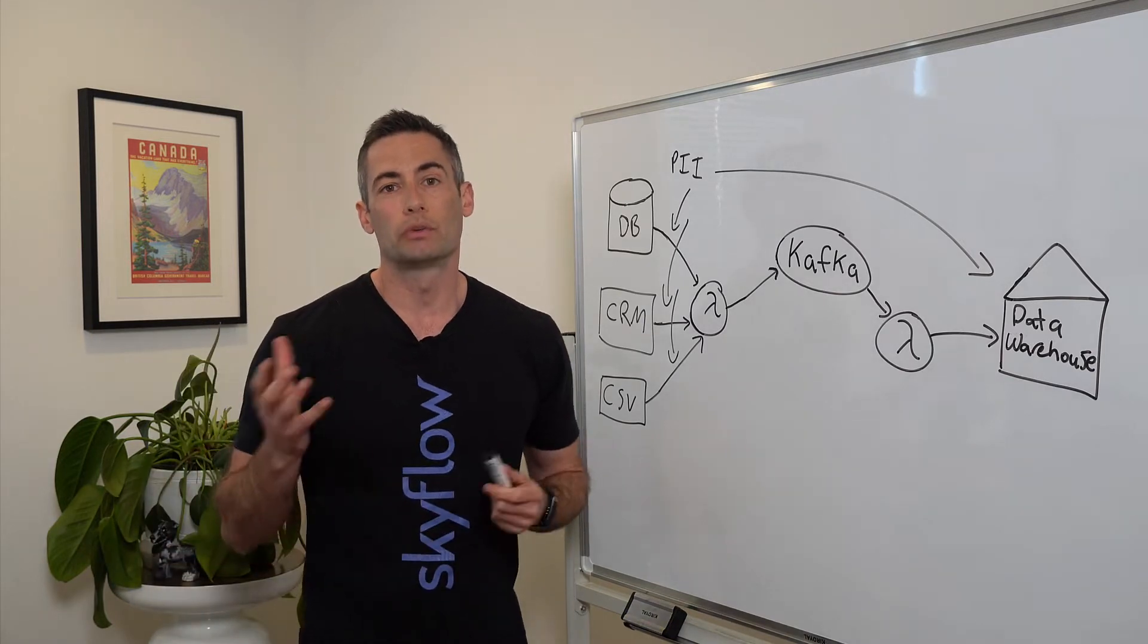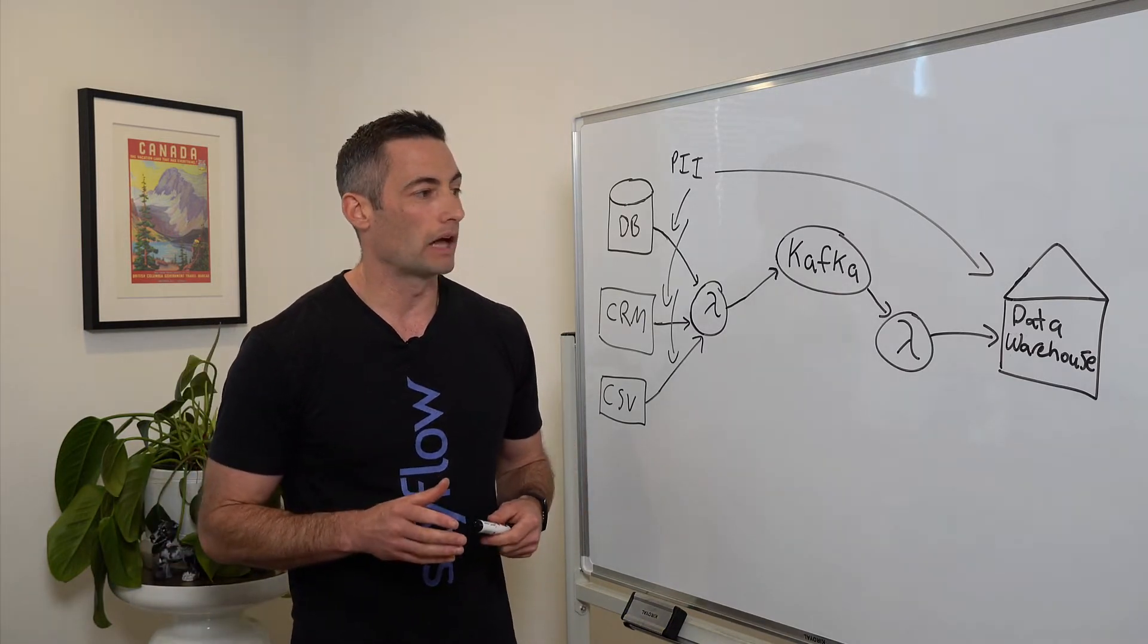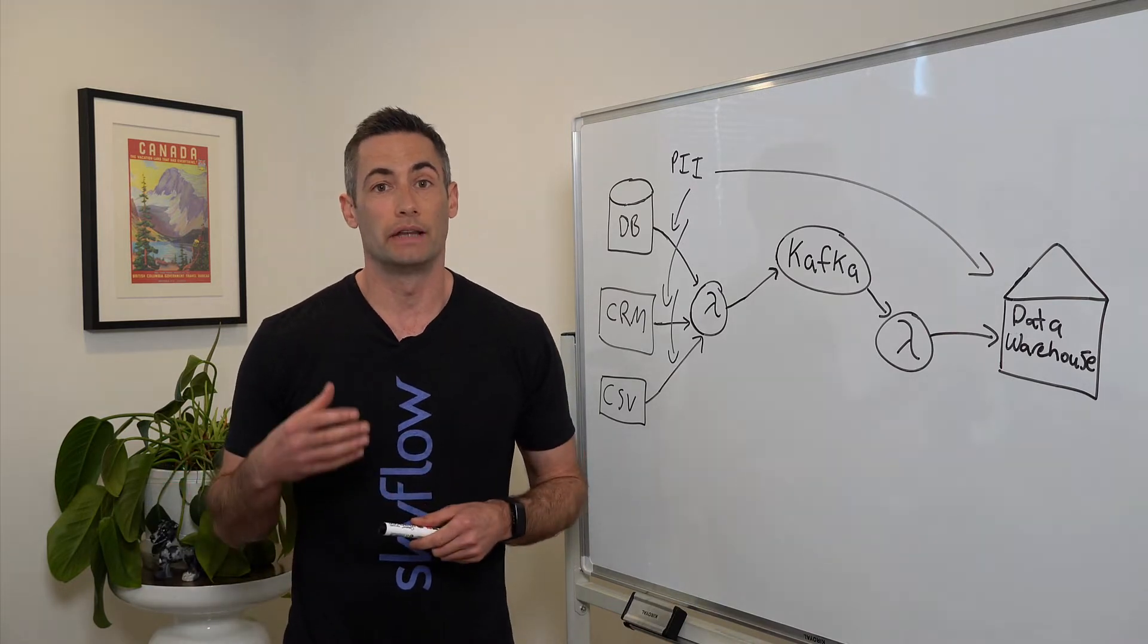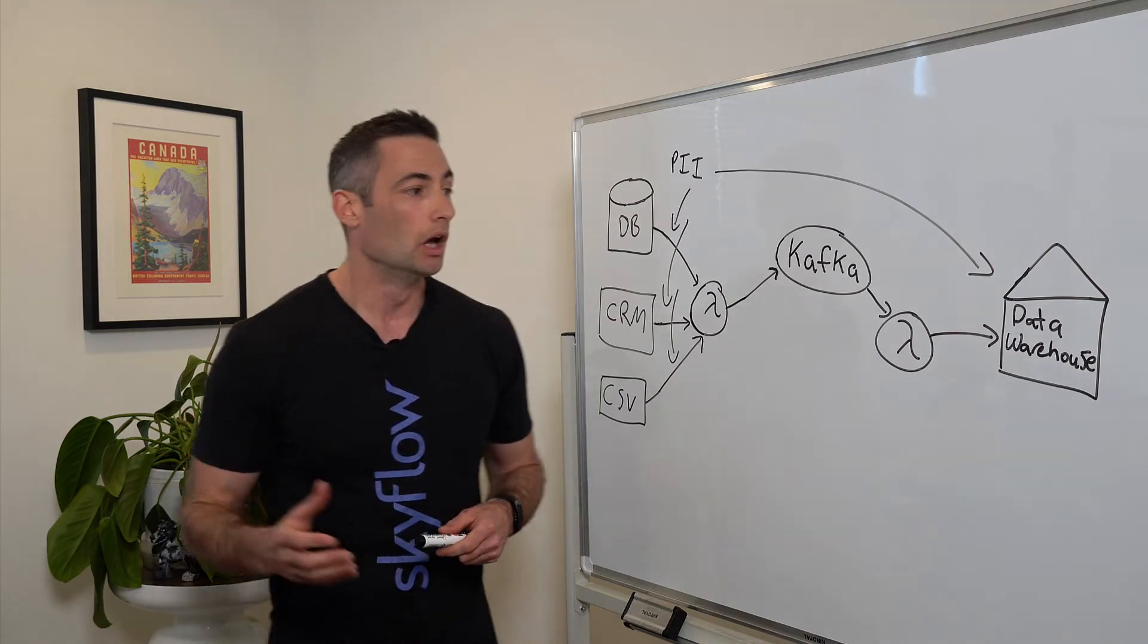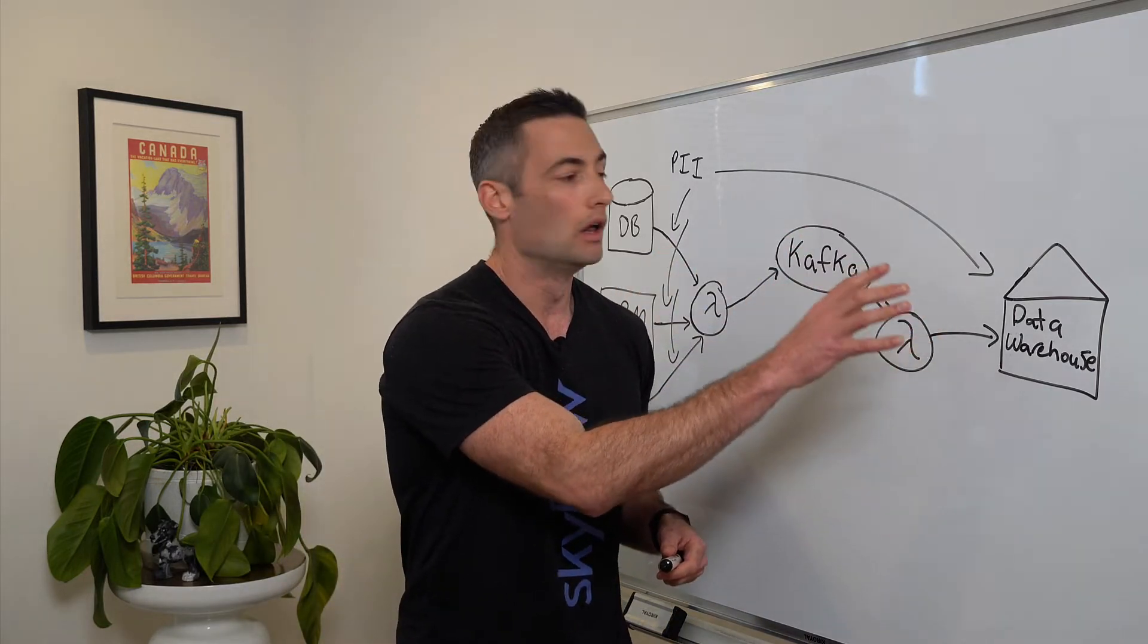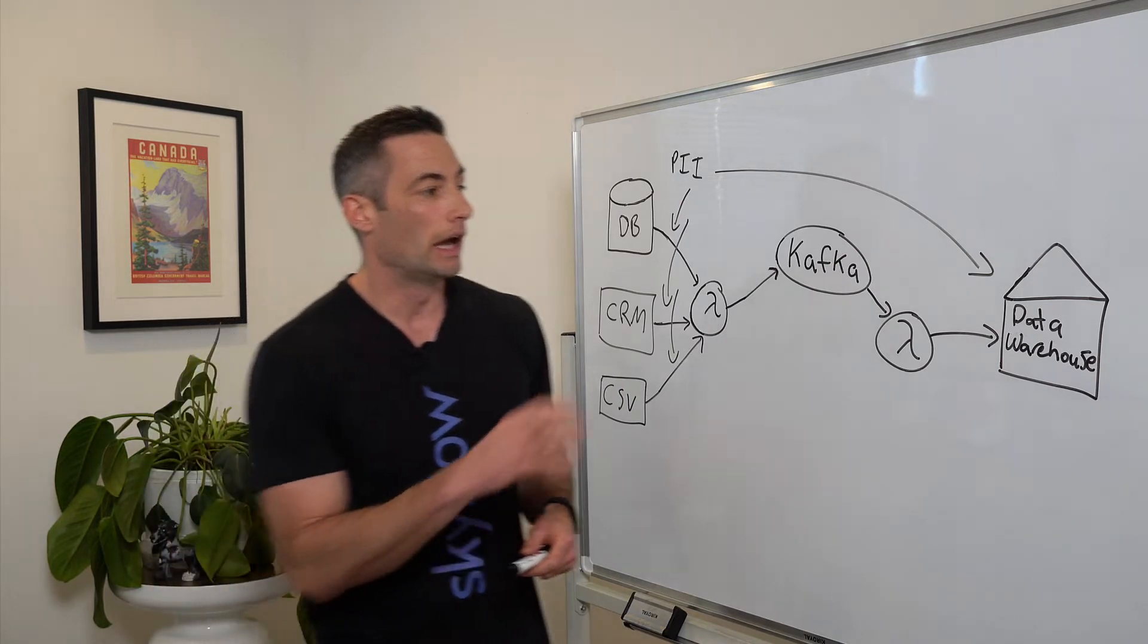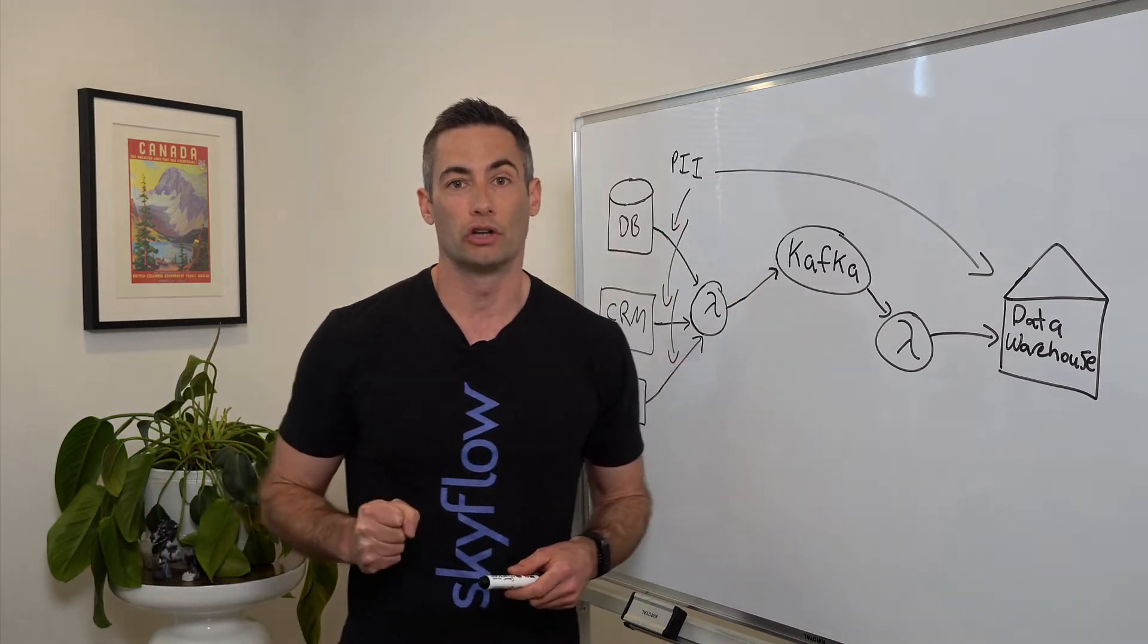So why is that a problem? Well, it's a problem for a couple different reasons. One is that if we need to comply with certain privacy laws that have things like data residency, well, now it becomes a real challenge to disentangle all of our customer PII from our existing application data and then regionalize it based on where those customers are in the world.